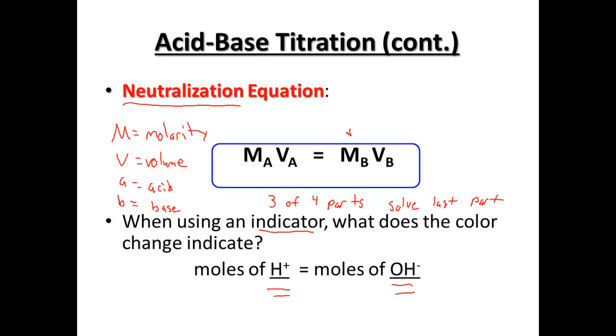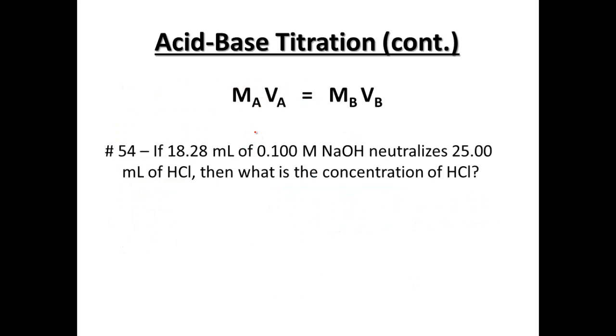Generally we're going to solve for the molarity of the base or the acid. So an example here is if you had 18.28 milliliters of 0.1 molar NaOH that neutralizes 25 milliliters of HCl, then what is the concentration of HCl? HCl is our acid, so we're going to look at solving for the molarity of the acid.